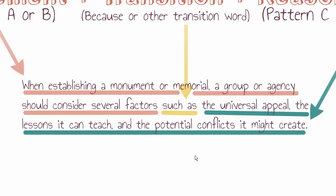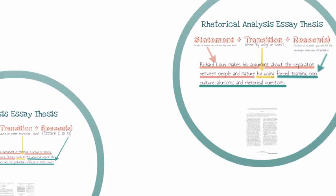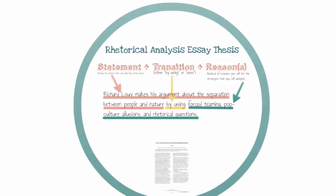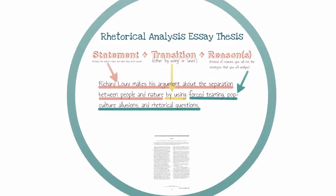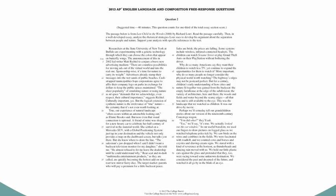So this is what it looks like to put a thesis statement together for a synthesis prompt. You answer the prompt with the statement portion: 'When establishing a monument or memorial, a group or agency should consider several factors.' You have your transition phrase 'such as,' and then you list your reasons: the universal appeal, the lessons it can teach, and the potential conflicts it might create. That is a good thesis for a synthesis essay.